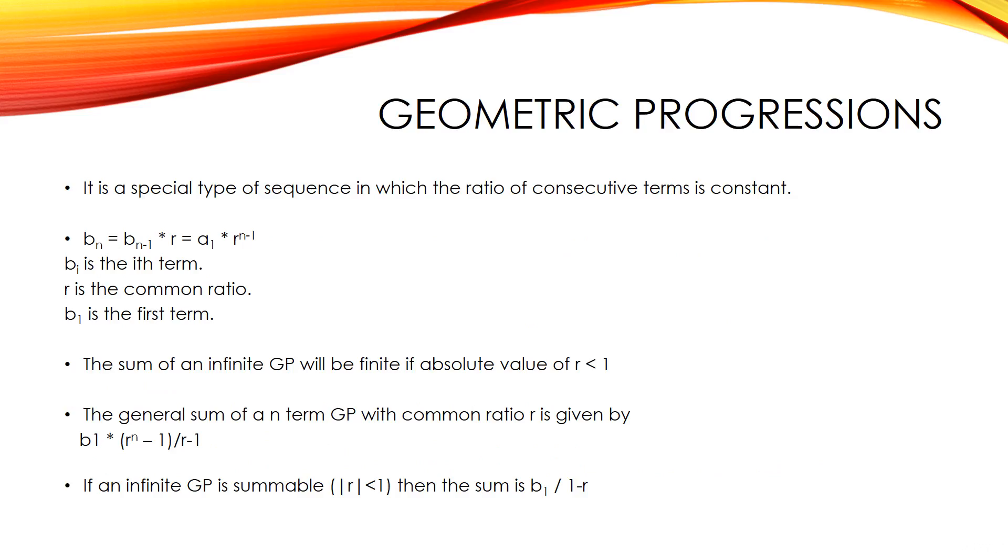Geometric progressions. It is a special type of sequence in which the ratio of consecutive terms is constant. The general term bn equals bn-1 into r equals b1 into r to the power of n-1. bi is the ith term, r is the common ratio, b1 is the first term.